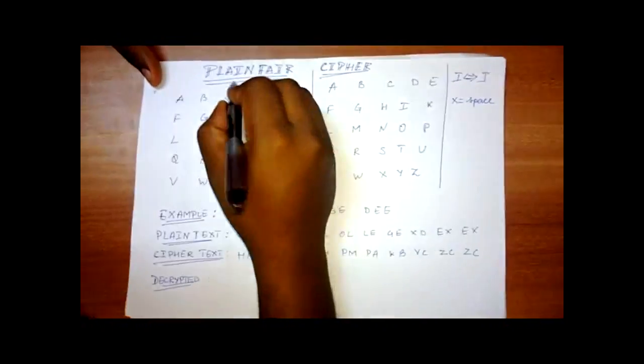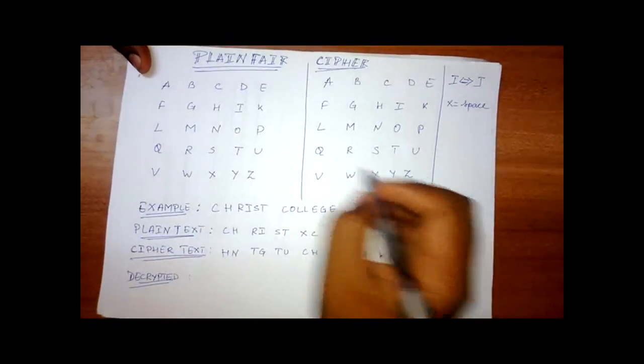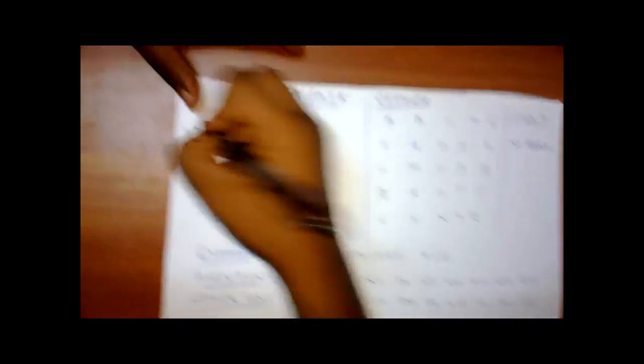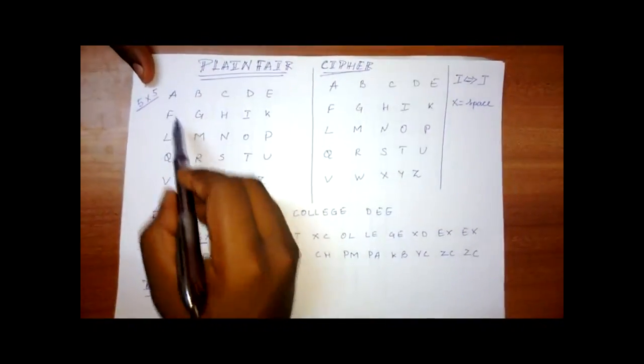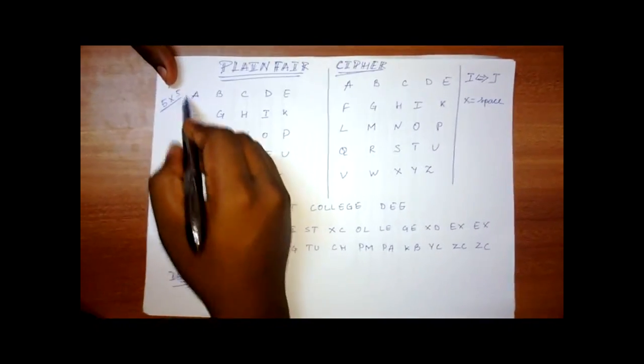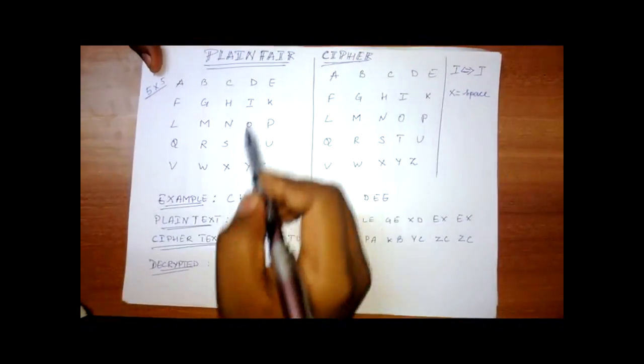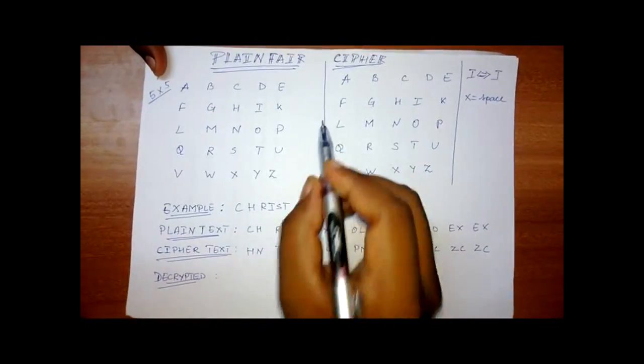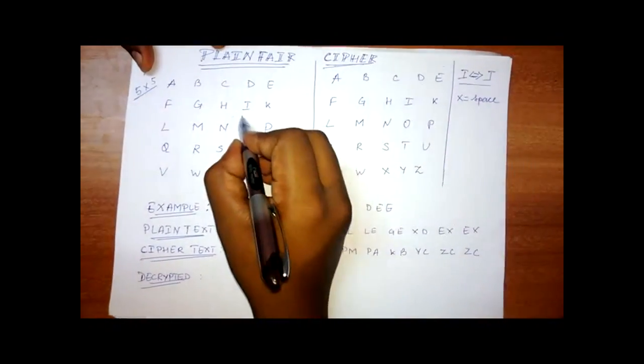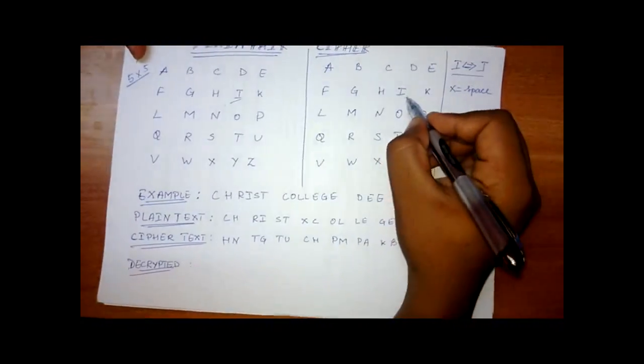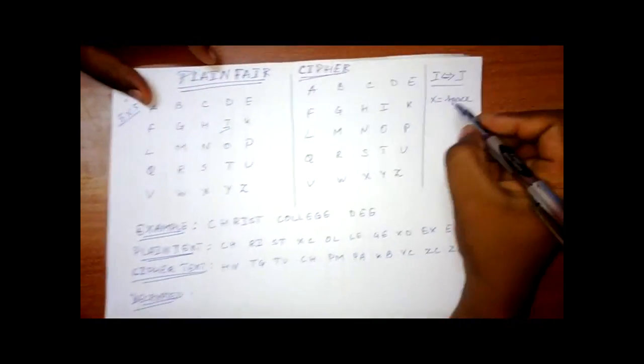Okay. So I will deal with the Playfair ciphers. So basically we have a 5 x 5 matrix or grid. This 5 x 5 matrix contains alphabets from A to Z in the form of rows and columns. Here as you can see, we have 5 x 5 matrix but we have a one bit change that is I and J. As you can see, I can be used as J or J can be used as I depending on the plain text.